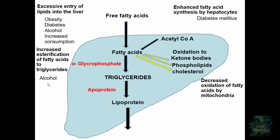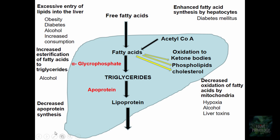Fifth, decreased oxidation of fatty acids by mitochondria — caused by hypoxia, alcohol, and certain liver toxins — results in decreased oxidation, meaning fatty acids are converted more into triglycerides, which then accumulate. In cases of protein energy malnutrition, there is decreased apoprotein synthesis. In malnutrition and carbon tetrachloride poisoning, triglycerides are not converted to lipoprotein, which means there is accumulation of triglycerides.